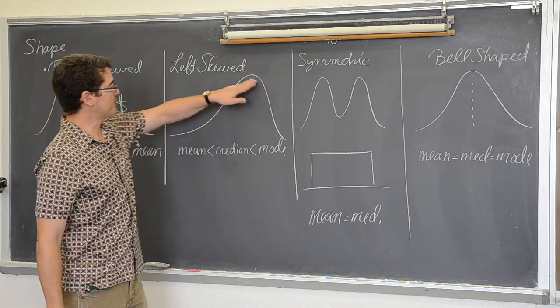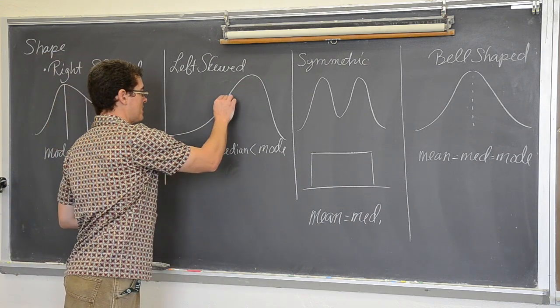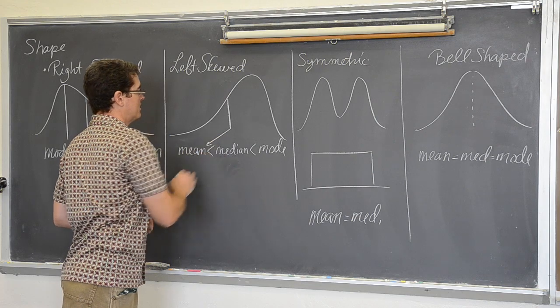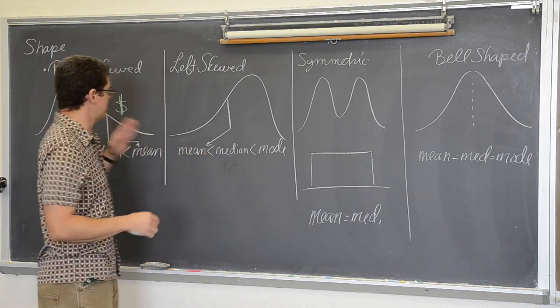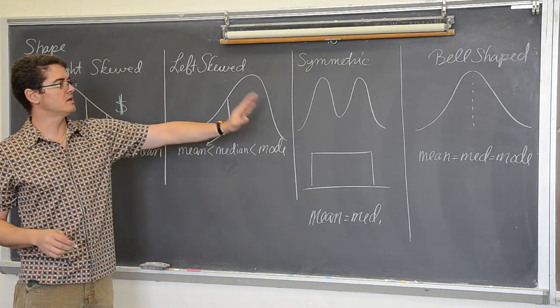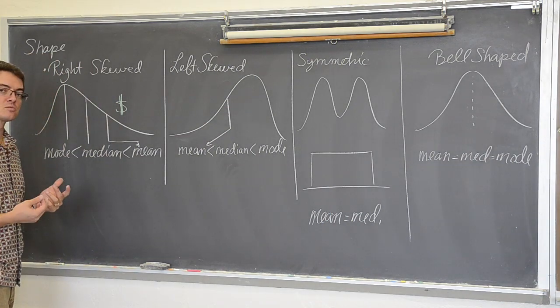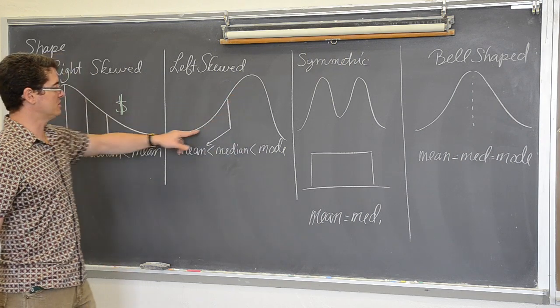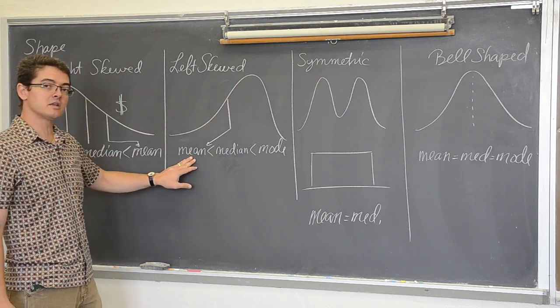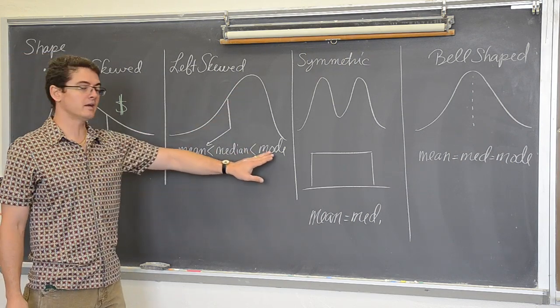If you have a left skewed distribution, means are always closest to the tail. I mentioned that before in a previous video in passing, but I wanted you to have a nice set of sketches you could copy and use as reference. If you have a left skewed distribution, your mean is the smallest measure of center, median, and then mode.